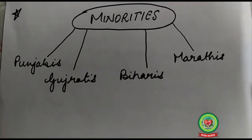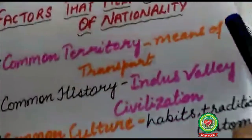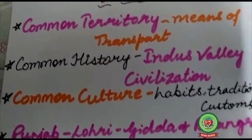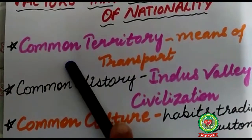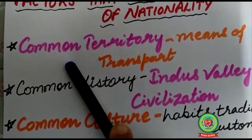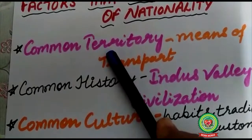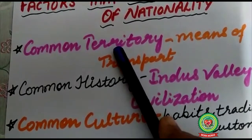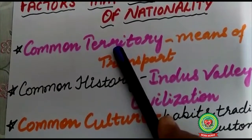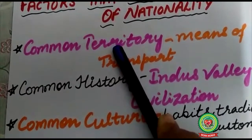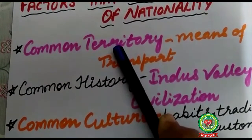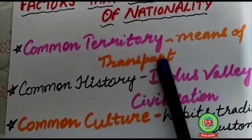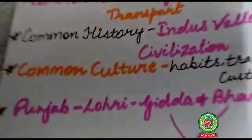Now I will discuss the factors that help the evolution of nationality. The first factor is common territory. People occupying a definite territory called their motherland naturally develop a sense of unity and oneness. But nowadays, due to the development of fast means of transport and communication, the geographical distance has become less important as a factor of nationality, as people can easily travel from one place to another.